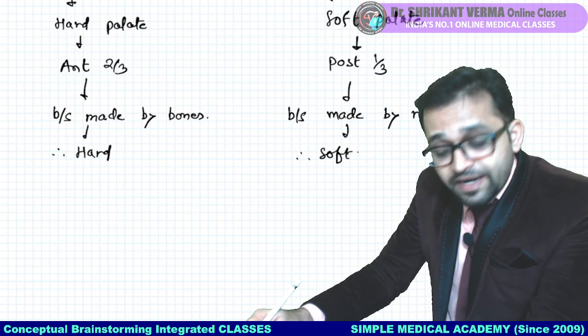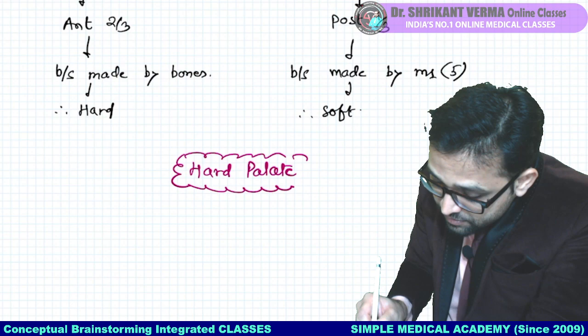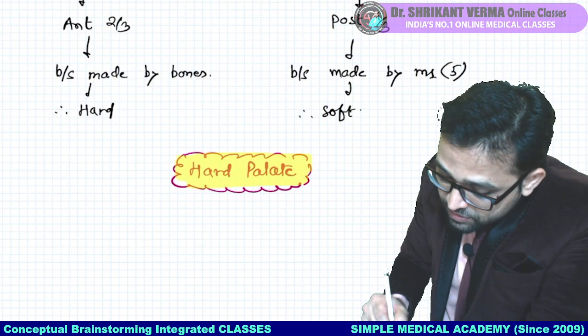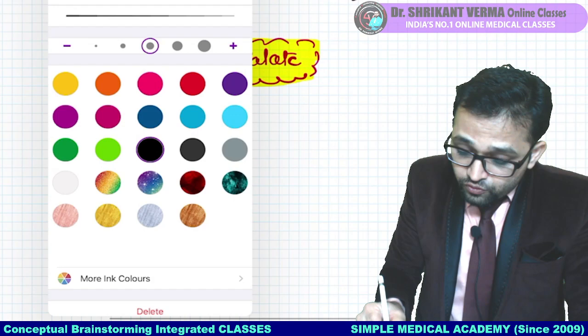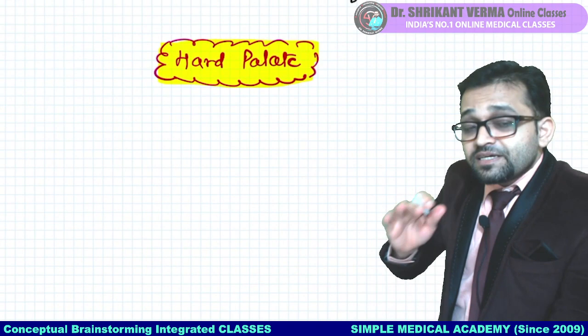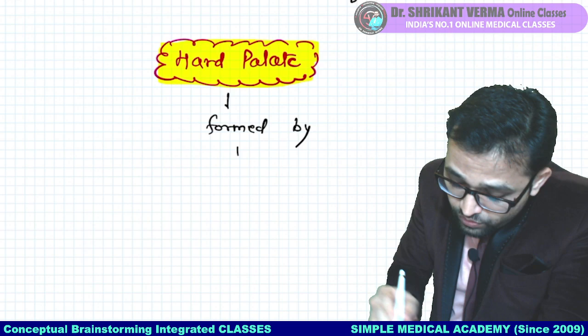Now we are going to talk about the hard palate — give it a proper heading. We will also make a diagrammatic presentation. Hard palate: it is formed by two different parts. Its two parts are: anterior two-thirds and posterior one-third. Kindly follow the textbook alongside.